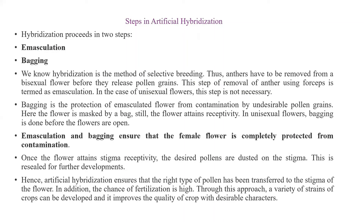In hybridization, there are two important steps: emasculation and bagging. Hybridization is the method of selective breeding, and the stamens have to be removed from the bisexual flower. We carry out the hybridization process on a selected plant, choosing a bisexual flower and removing its male reproductive system so we can avoid contamination from undesired pollen grains and gain the seeds of our interest.